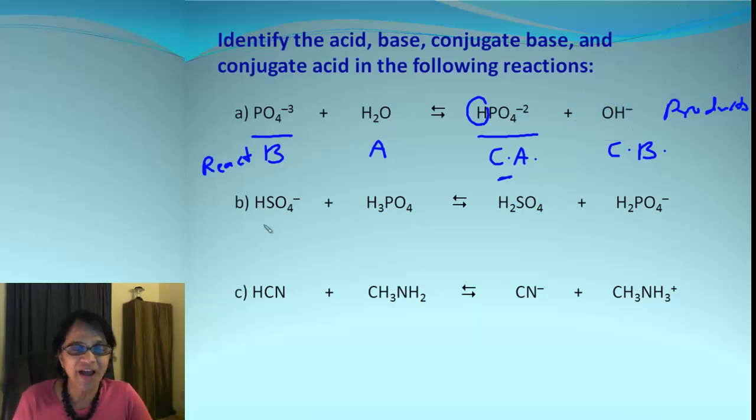In second example, we have this as one pair and then we have, of course, this is the second pair. So the first pair which we got is having one more hydrogen on this side. That means that must be acid. It's on the product side. That must be conjugate acid. And then that must be base.